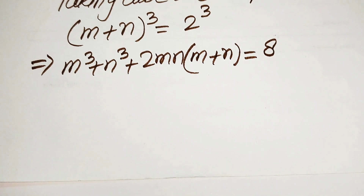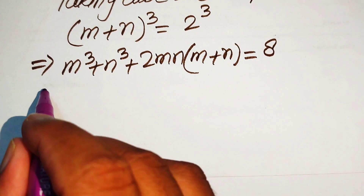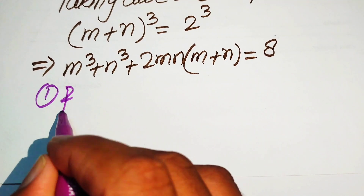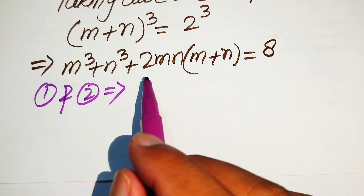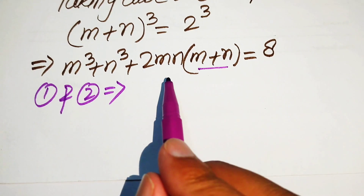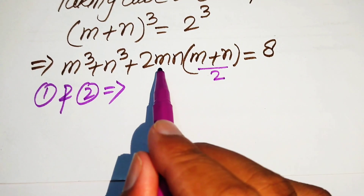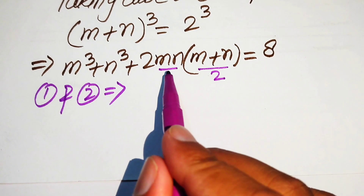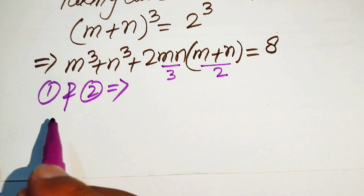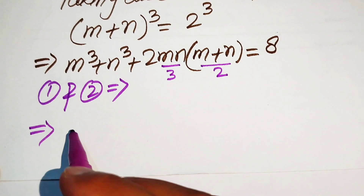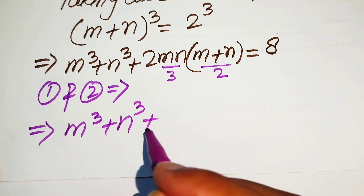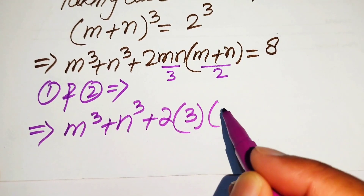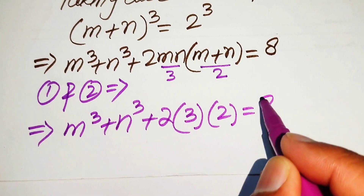We use equation number 1 and 2 here. From equation number 1 we have m plus n equals 2 and from equation number 2 we have mn equals 3. Substituting these values, it is written as m cubed plus n cubed plus 3 times 3 times 2 equals 8.